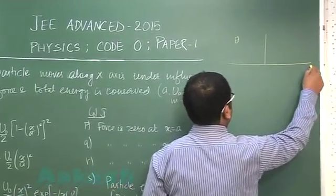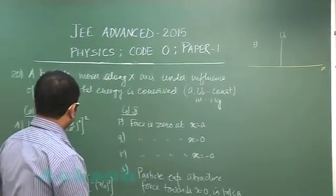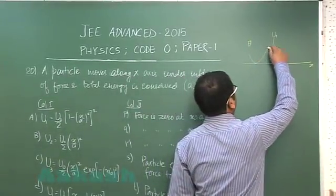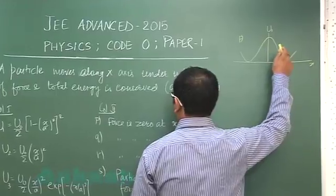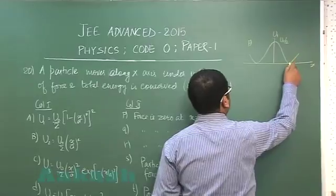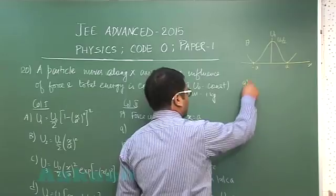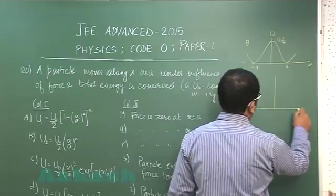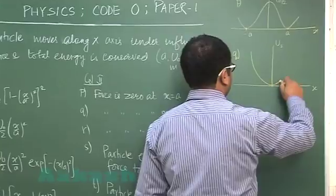To draw the graph at this level, you should be able to create this sort of graph. At x equals zero, this would be U₀/2, and this is x equals a, this is x equals minus a. Let's plot the graph for Q. Q is very straightforward—that would be an upward going parabola.